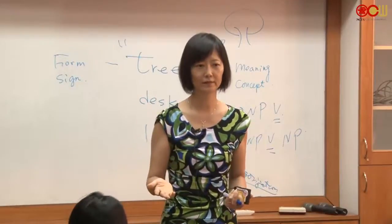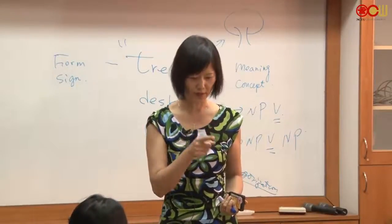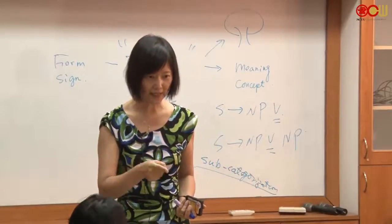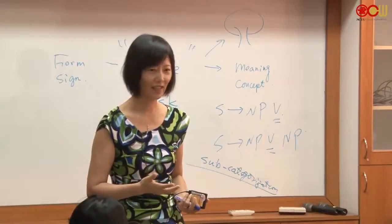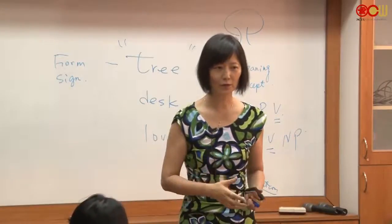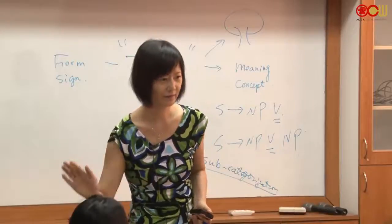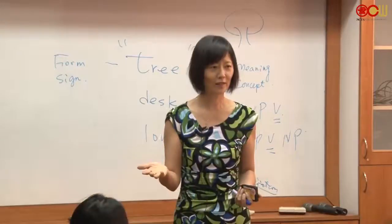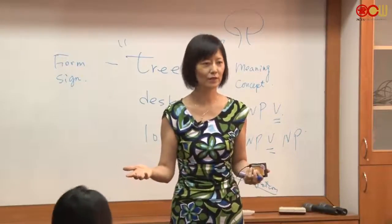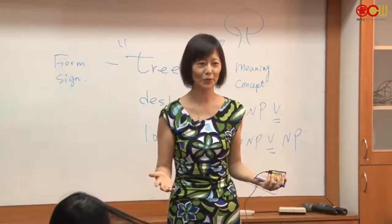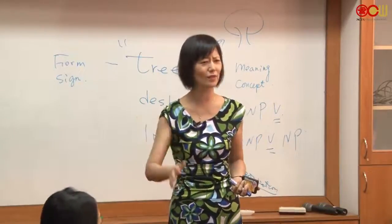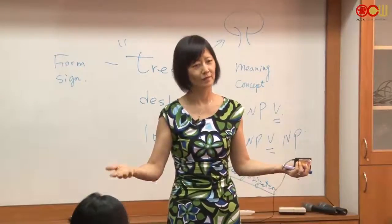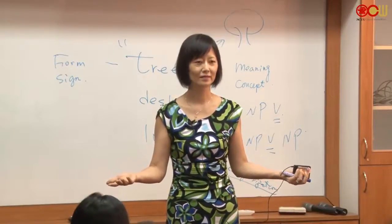This is the clear distinction between transitive and intransitive. We memorized transitive and intransitive from the very beginning — all verbs help you express real events in the world. There are simply two kinds of events: one involves only one participant, like jump — 不及物, meaning 不及於另一物. The other kind — 及於另一物 — is transitive. That's the distinction.